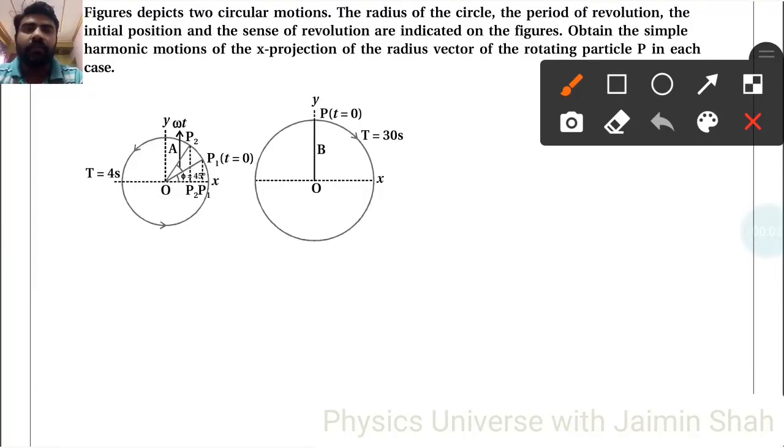Question is, figure depicts two circular motions. The radius of the circle, the period of revolution, the initial position and the sense of revolution are indicated on the figures. Obtain the simple harmonic motions of the X projection of the radius vector of the rotating particle P in each case.